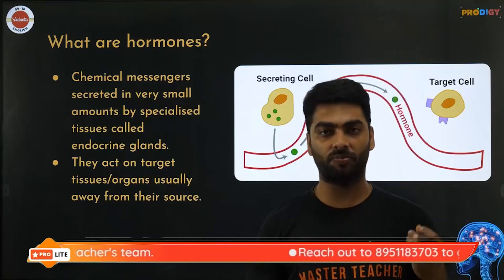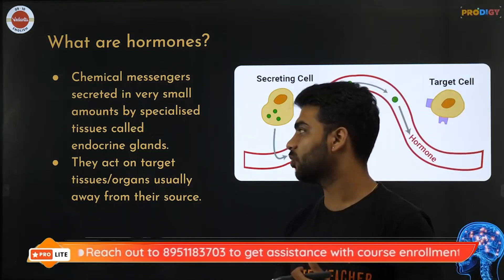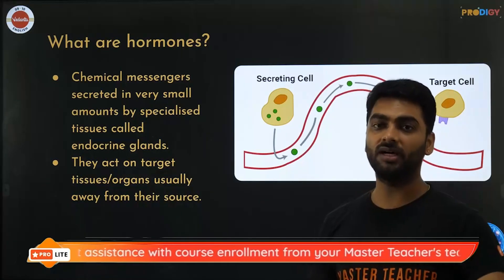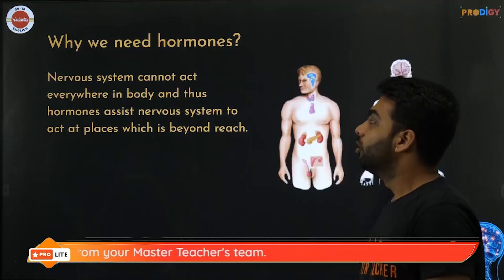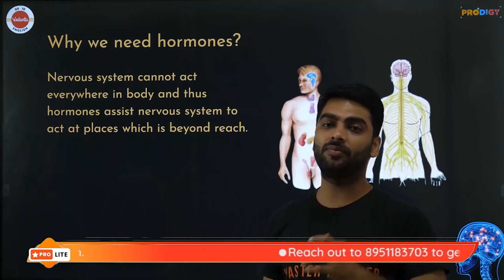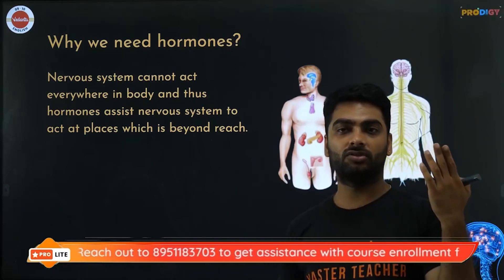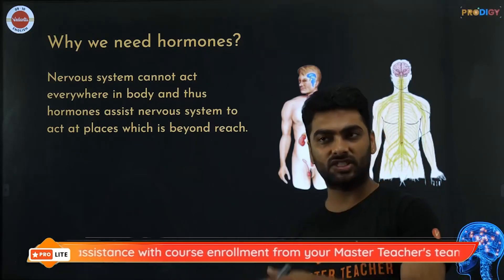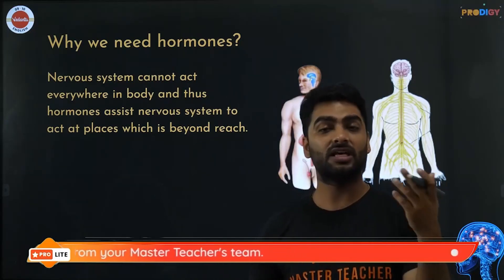Hormones are chemical messengers of the body, secreted in very minute quantities from endocrine glands. They directly act on the target organ which is away from the gland. The nervous system cannot act everywhere, so hormones assist the nervous system to maintain homeostasis in the body. Examples include growth hormone, happy hormones, adrenaline and noradrenaline (stress hormones), testosterone, estrogen, progesterone, and insulin.